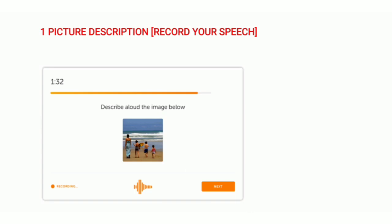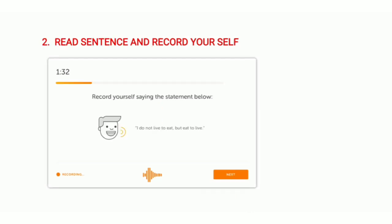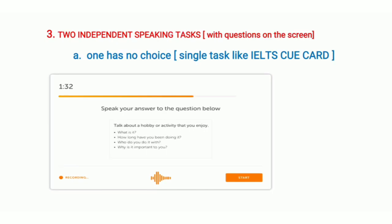Now let's move to the second question type. As you can see in the image, it is 'read the sentence and record yourself.' You will see a sentence and have to read it aloud and record your answer. It's much easier than other questions unless the sentence contains a difficult word to pronounce. You don't have to prepare it beforehand because no preparation time is given. For more detailed information and practice tests on this question type, I will provide links in the description box.